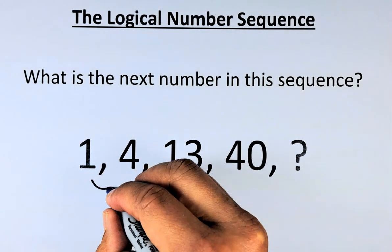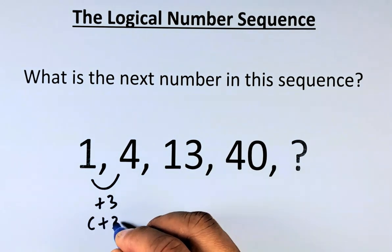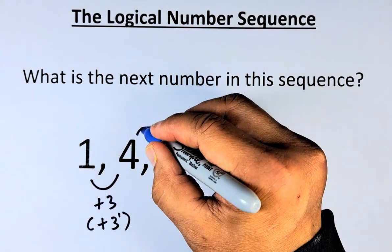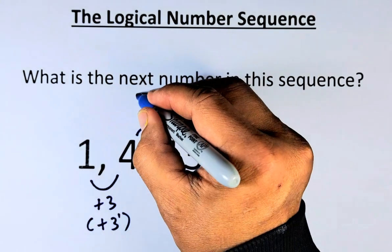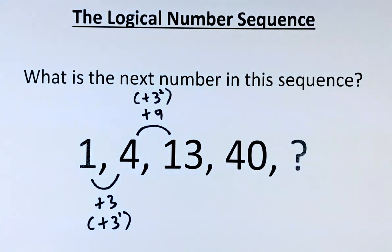So from 1 to 4 is plus 3, or you can write them as plus 3 to the power 1. From 4 to 13, it's going to be add 9. So 4 plus 9 gives you 13. It can also mean plus 3 to the power of 2, or 3 squared.